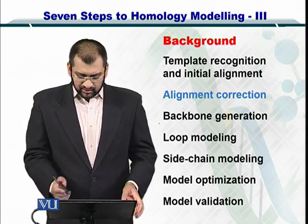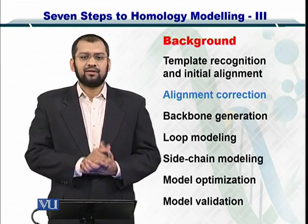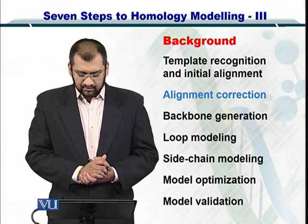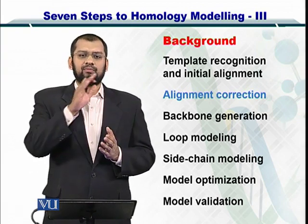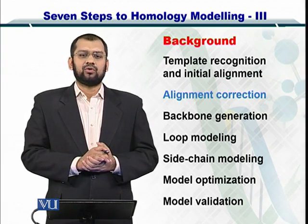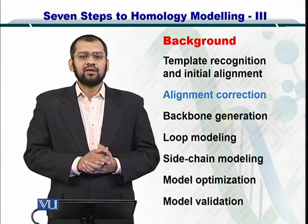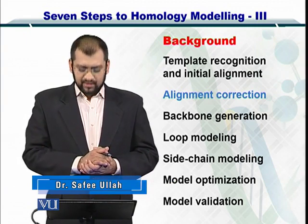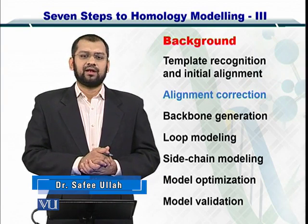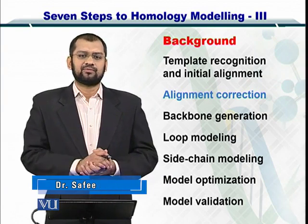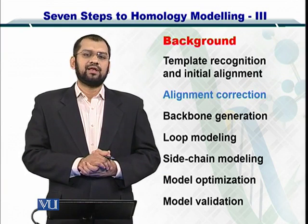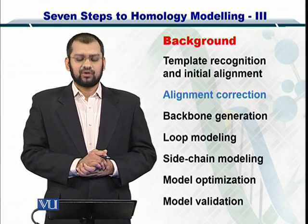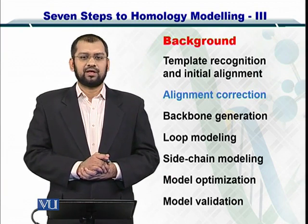The 7 steps in order are: template recognition and initial alignment, followed by alignment correction, then generation of the backbone, loop modeling and rotamer association — also called side chain modeling — then model optimization, and finally you validate the structure that you have computed. In this module, let's take a look at alignment correction.